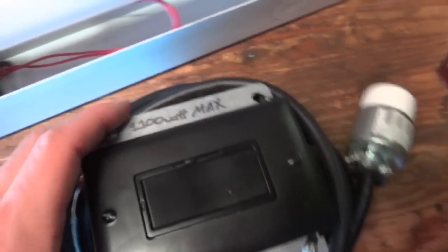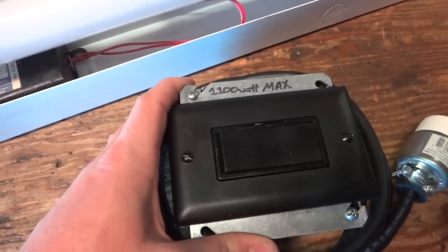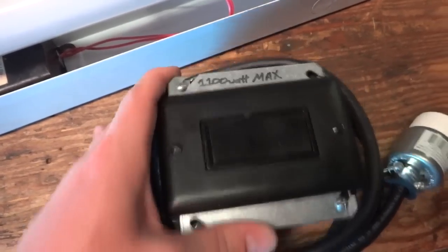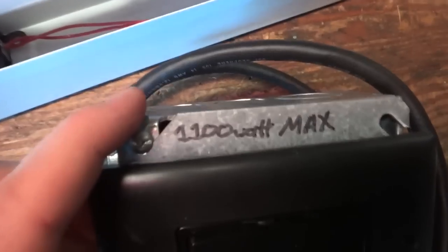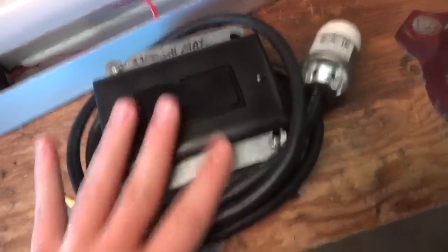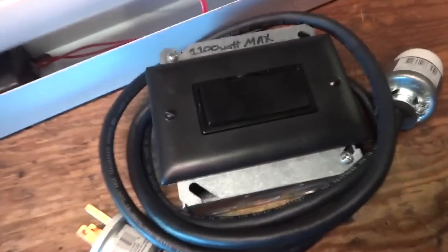This is the dimmer that I'm going to use. I use these for big strands of lights. They're high wattage dimmers. This one can take up to 1100 watts. So I make these little boxes and they work quite well. So I'm going to plug it all in and I'll come right back.